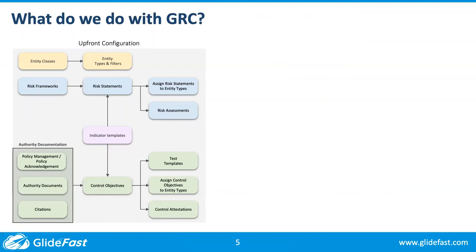Entities can be anything — applications, servers, VPs, departments. Then we look at the authorities. Every enterprise has internal policies, perhaps kept in SharePoint; ServiceNow has a policy management process and repository as part of policy management. Policy management, policy acknowledgement, and the authority documents that come with it — that's the external side of the house. If the policy you set for yourself to brush your teeth is the internal side, the regulations from the American Dental Association are the authority documents.